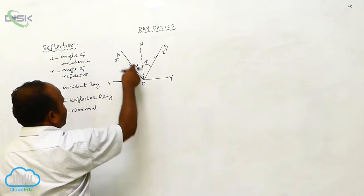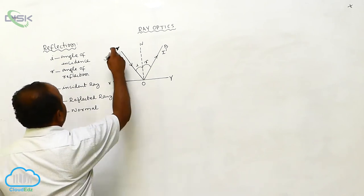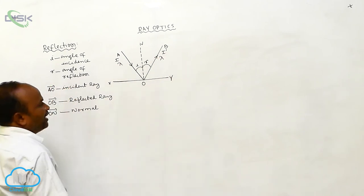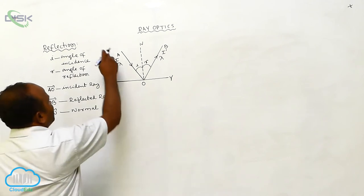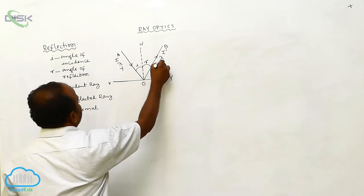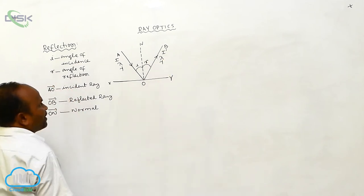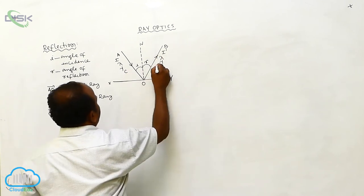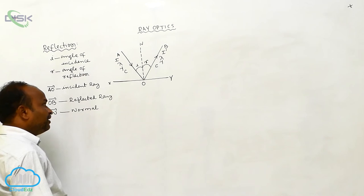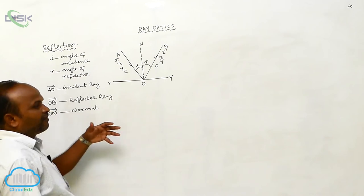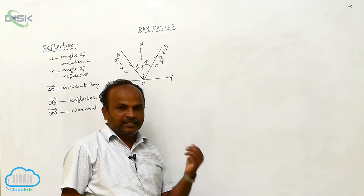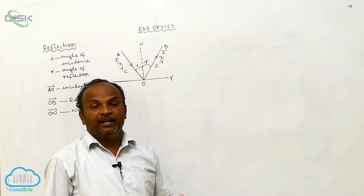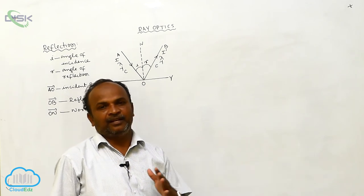The incident ray frequency is nu, and the reflected ray frequency is also nu. The incident ray speed is C, and the reflected ray speed is also C. In the reflection process, the light's frequency, wavelength, speed, and phase do not change.